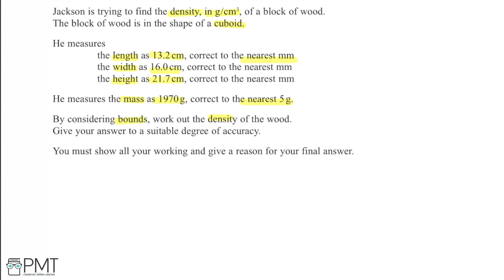When we see the phrases 'correct to the nearest,' we're instantly thinking that we're going to be working with bounds. We're going to be working with an upper and lower bound for density in the end, using upper and lower bounds of mass and volume.